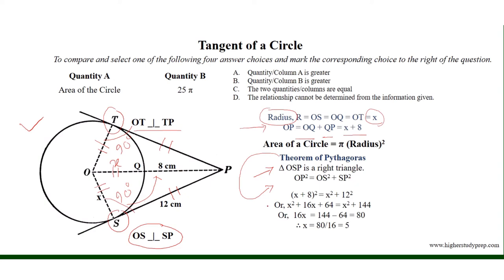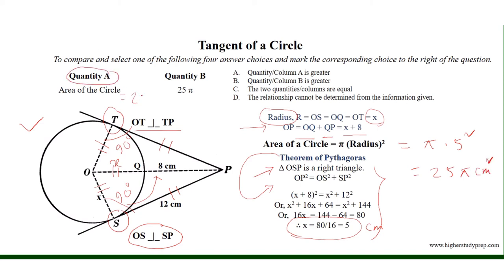Applying the theorem of Pythagoras, we can get that X is equal to 5 centimeters, and that is why the area of this circle equals pi times 5 squared, which equals 25 pi square centimeters. So quantity A equals 25 pi, and it is given that quantity B is equal to 25 pi as well. So the correct answer is choice C, which states that the two quantities are equal to each other.